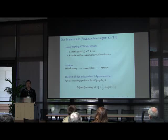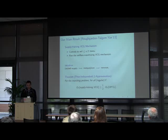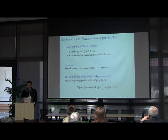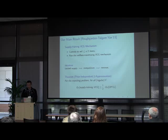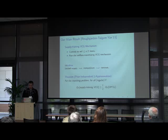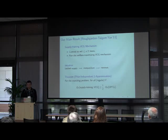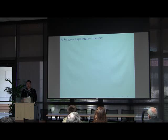It turns out this mechanism gives a prior independent 2-approximation. The theorem states that for the matching problem, the expected revenue of the supply-halving VCG mechanism is a half approximation to the optimal expected revenue. Importantly, this mechanism has no knowledge of the distribution, while the optimal mechanism is tailored for it. To prove this theorem, we first need to prove a resource augmentation theorem.